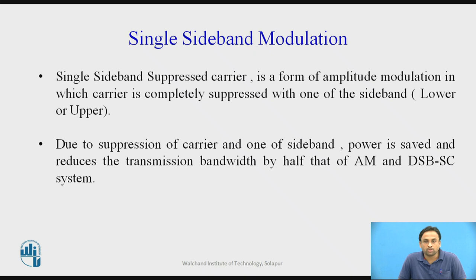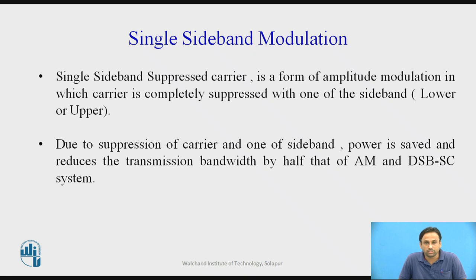SSB is one form of amplitude modulation where the carrier is completely suppressed along with one of its sidebands — either the lower or upper sideband. As we know, the information carried in both sidebands is the same. So in some applications we don't require that level of redundancy, and we can use single sideband modulation where the carrier and one sideband are suppressed.